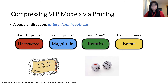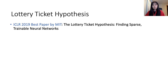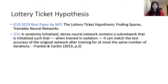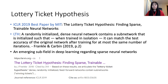Another direction is to compress VLP models via pruning. For pruning, there are four important questions: what to prune, how to prune, how often, and when to prune. A popular direction is the lottery ticket hypothesis, from the ICLR 2019 best paper from MIT. The key idea is whether we can find a sparse subnetwork in a dense neural network that can match test performance — an emerging subfield in deep learning regarding sparse neural networks.